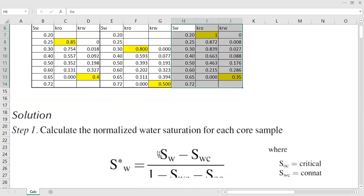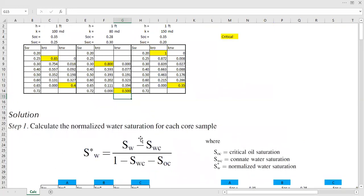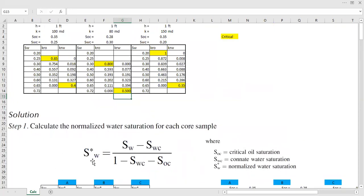So first, we need to calculate the normalized water saturation for each core sample. We call this SW star. And the calculation is very easy. Water saturation minus connate water saturation divided by 1 minus connate water saturation minus critical oil saturation or residual oil saturation.